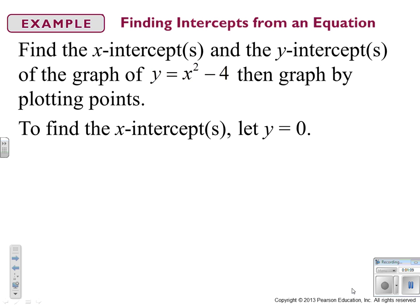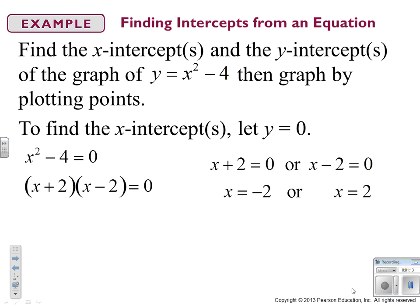To find the x-intercepts, we're going to plug in 0 for y. So when we do, we get x squared minus 4 equals 0. And then we factor this quadratic to x plus 2, x minus 2, set it equal to 0. I need to find out the scenario where x plus 2 equals 0, and where x minus 2 equals 0. So our x-intercepts are x equals negative 2, and x equals 2.